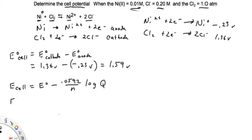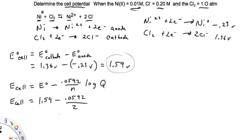So E_cell — we just determined E⁰ is 1.59 volts. This is a spontaneous reaction because the voltage is positive. We subtract the factor that accounts for concentrations other than 1 molar: 0.0592 divided by 2, because we're dealing with 2 electrons, times the log of Q. Q is products over reactants. Chloride is 0.20 molar — that's one of the products.